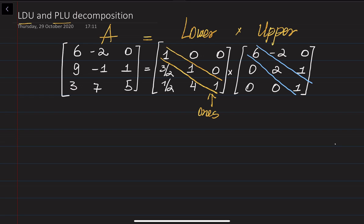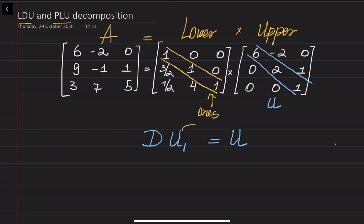The idea is to substitute the U matrix with another matrix U1 by multiplying by a diagonal matrix, so that all the diagonal entries of U1 are equal to one.